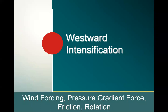Hello, welcome back. We're going to be talking about westward intensification. We've talked about this a little bit so far, and we've talked about western boundary currents. Right now we're going to look at why we have westward intensification. Why do we have those strong western boundary currents? The factors we'll explore include wind forcing, pressure gradient force, friction, and rotation.